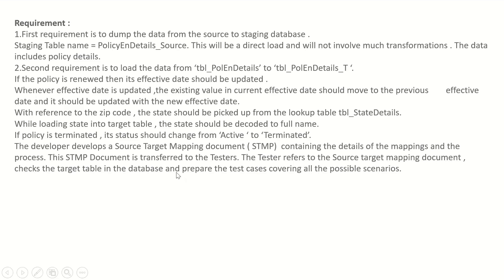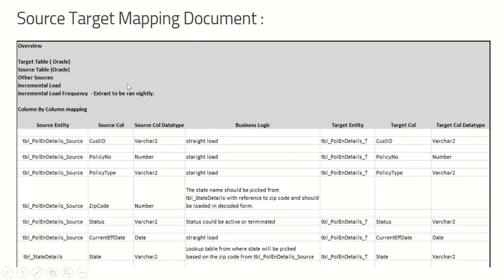The tester refers to the source target mapping document, checks the target table in the database, and prepares test cases covering all possible scenarios. Looking at the STM document: on the top left it mentions the overview — target table is Oracle, source table is also Oracle. Other details include incremental load, incremental load frequency, and extract to be run nightly. The document has column-by-column mapping: source entity, source column, source column data type, business logic, target entity, target column, and target column data type.